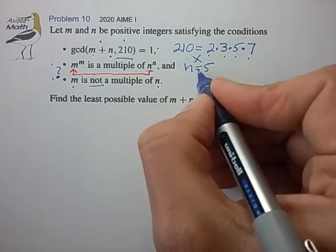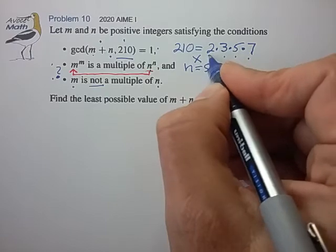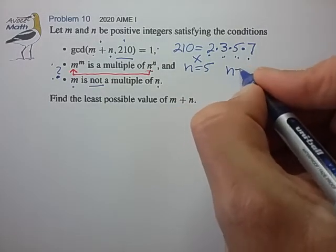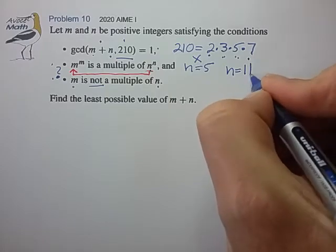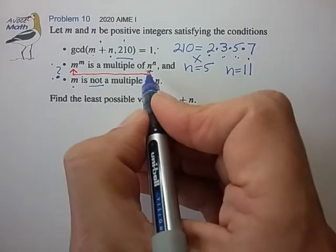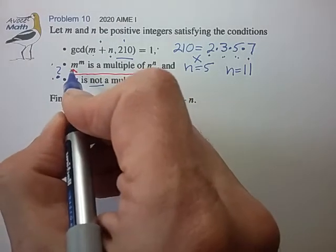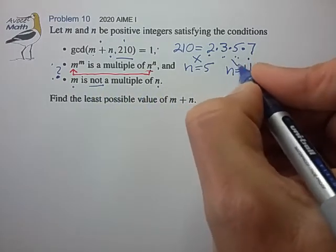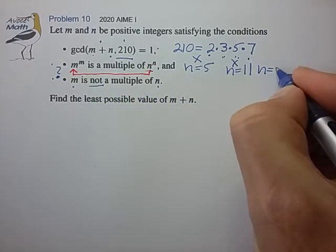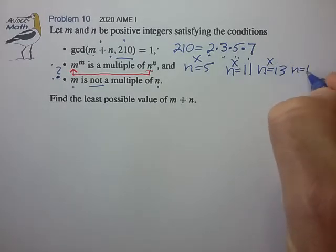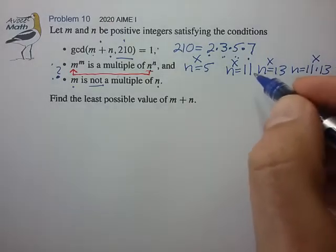So we can't choose n equal to 5. We can't choose it equal to 2, 3, 5, or 7. So the next thing that we could choose, just to get a feel for this, is what if we choose n is equal to 11. If we choose n is equal to 11, m will pick up that factor of 11, such that m will be a multiple of n. So that doesn't work. If we let n is equal to 13, we run into the same problem. If we let n equal to, say, 11 times 13, we run into the same problem.